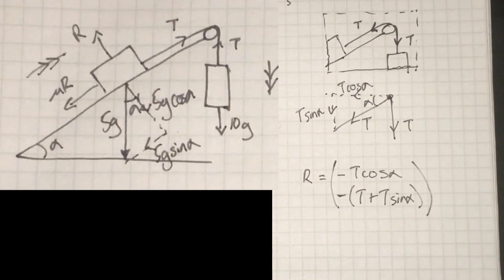So this is the vector that we get. We can rewrite that bottom component, we can rewrite that vertical component by factorizing out the T.